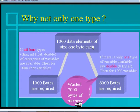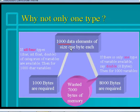Now, if you want to store 1000 data elements of size 1 byte each into this variable, then 8000 bytes are required to store it. So to store 1000 data elements of size 1 byte each, if you use a double type of variable, then 8000 bytes are required.